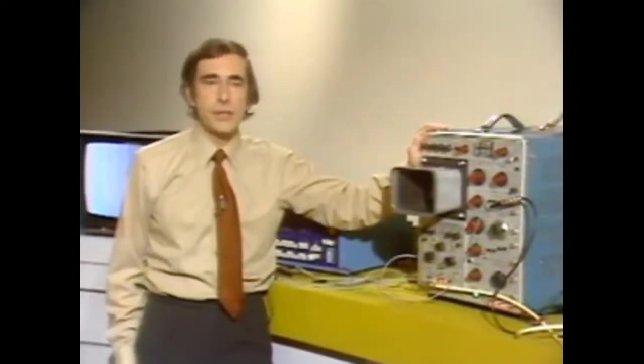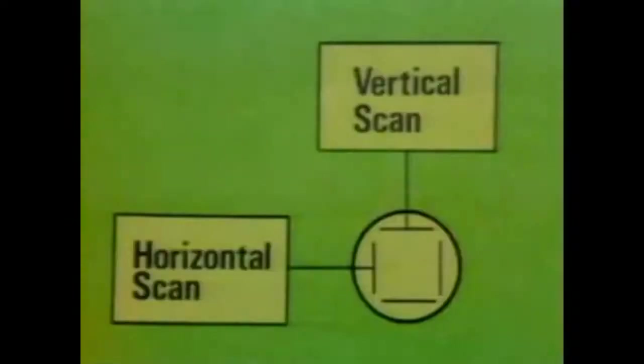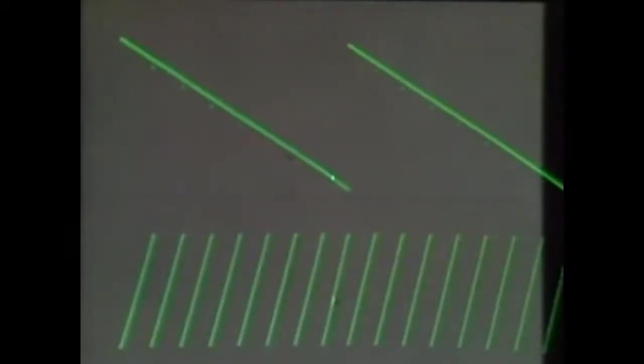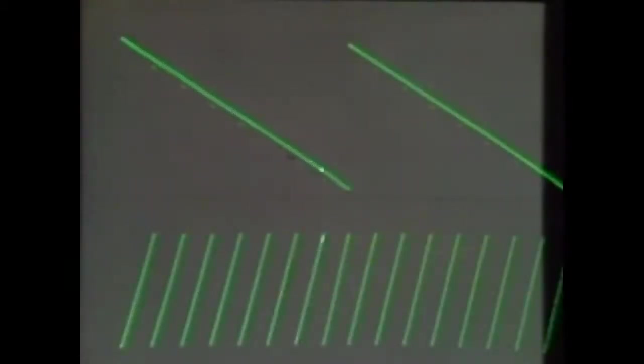On this oscilloscope, we are tracing out a very simple raster consisting of eight lines. I'm using a storage scope so you can actually see the lines after they've been traced out by the spot. The way this raster is produced is by applying sawtooth waveforms to the X and the Y plates of the oscilloscope. The lowest trace is the X, that is the line waveform, and above it we have the Y waveform. There are eight X waveforms for every Y waveform — the spot moves across the screen eight times each time it moves from top to bottom.